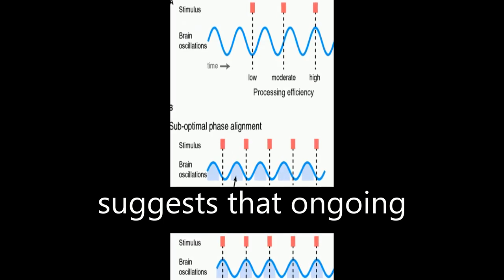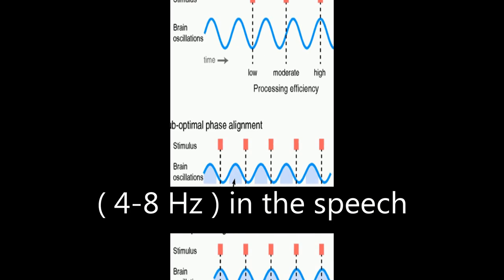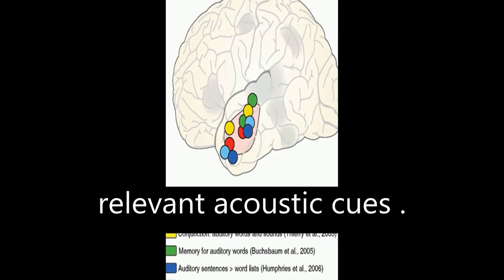Neuroimaging data suggests that ongoing cortical oscillations phase lock to low-frequency information, 4 to 8 Hz, in the speech envelope, which helps increase sensitivity to relevant acoustic cues.